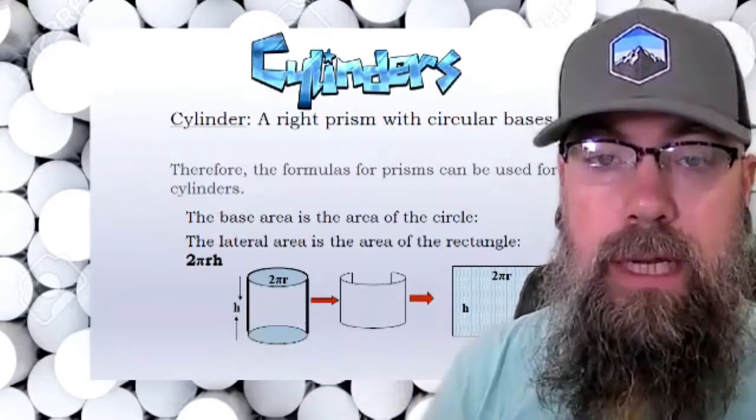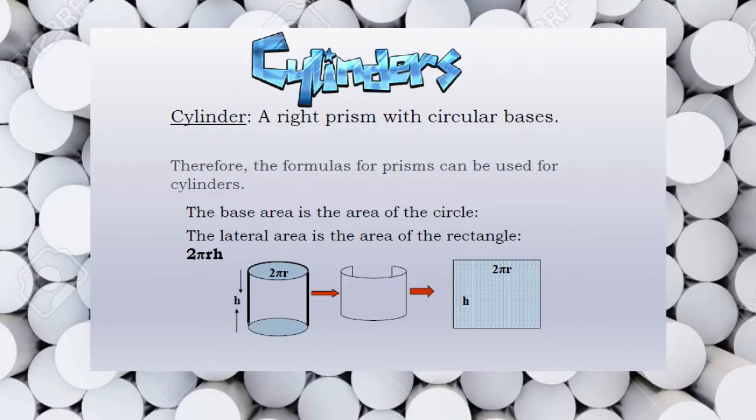What we're going to do is calculate the area of the base and then multiply that times the height. If you look at the pictures on the bottom, if we took this can or cylinder apart, we would have a perfect rectangle with two circular pieces.